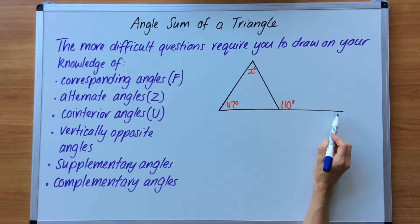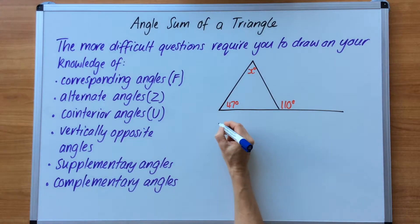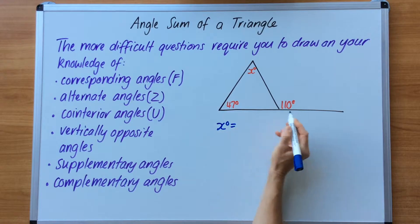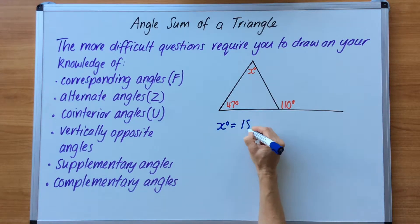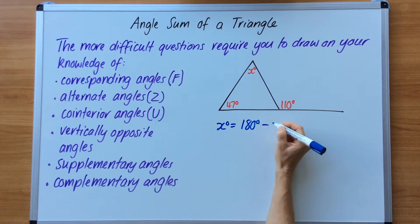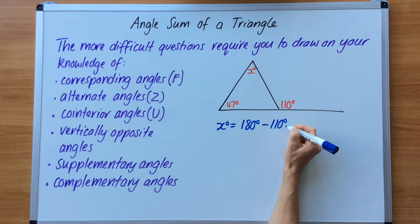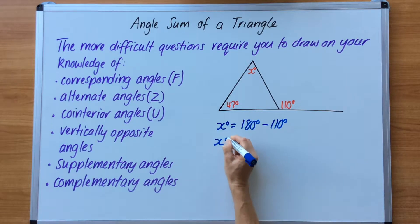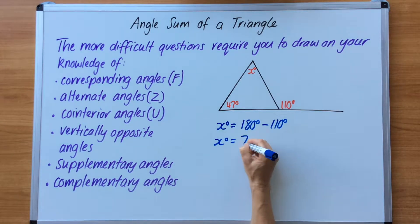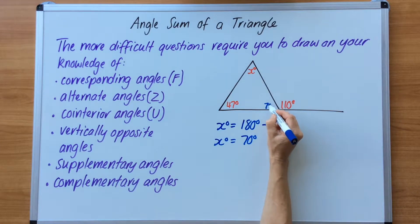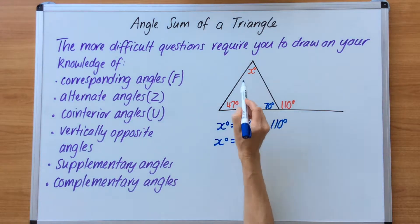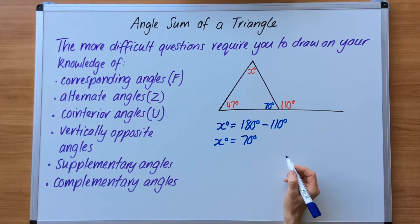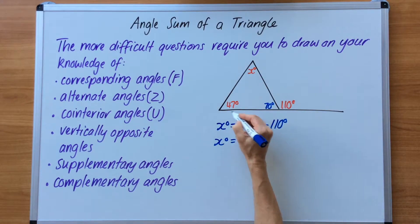Supplementary angles add up to 180 degrees. So in order to solve x, I have to start here with the supplementary angle. x equals 180 degrees minus what I know here — 110 degrees — and that equals 70 degrees. So now I've found this missing angle of 70 degrees, and I had to find that in order to solve x. Now I can move on and focus on the triangle.